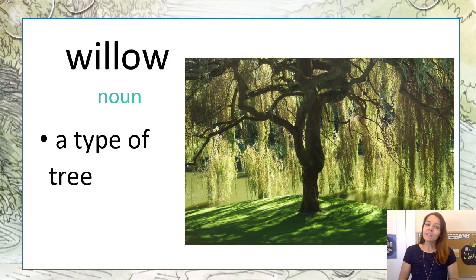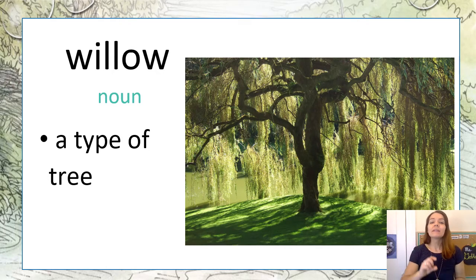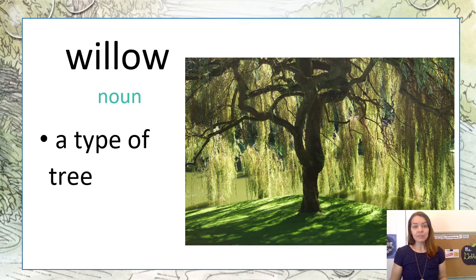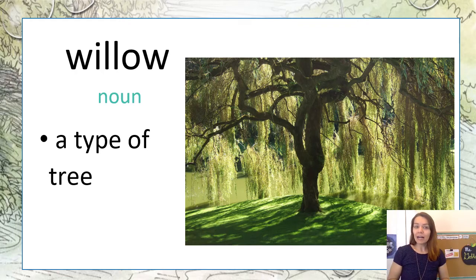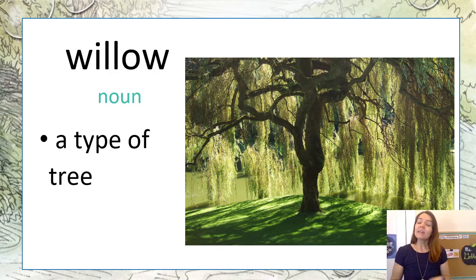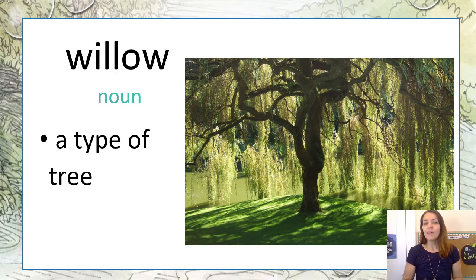You will notice in your document there are some pausing points. You're going to scroll past that pausing point once you've finished your do now and we're going to start with our vocabulary. There is a yellow box on your Google Doc next to the definition 'a type of tree.' You're going to click into that yellow box and type the word willow, because that's our first vocabulary word.